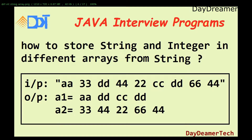Welcome friends to today's Java interview program. Today we are discussing a new interview question: how to sort a string and integer — how to store strings and integers in different arrays from a single string. Sometimes interviewers will ask you to write two different arrays to store integers and strings from one single string. One of my friends got this question in an interview and was not able to write the program, so today I am discussing how we can write a program to separate different data types into different arrays from one string.